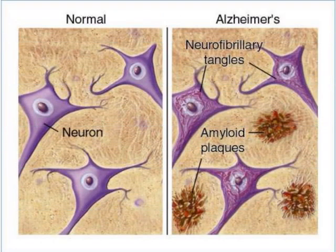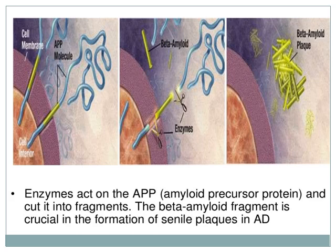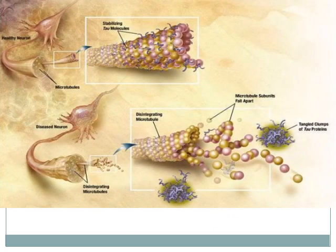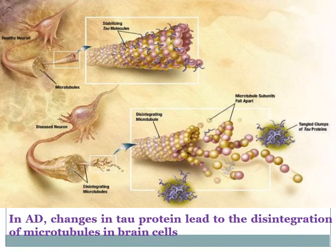In this picture, we can see the development of neurofibrillary tangles in neuron cells and the formation of amyloid plaques around brain cells in Alzheimer's disease compared to normal neurons. An enzyme is shown acting on the amyloid precursor protein (APP), cutting it into fragments, which leads to the formation of senile plaques in Alzheimer's disease. Additionally, microtubules have tau molecules in their structure to maintain stability, but in Alzheimer's disease, alterations in tau proteins lead to disintegration of the microtubules in brain cells.